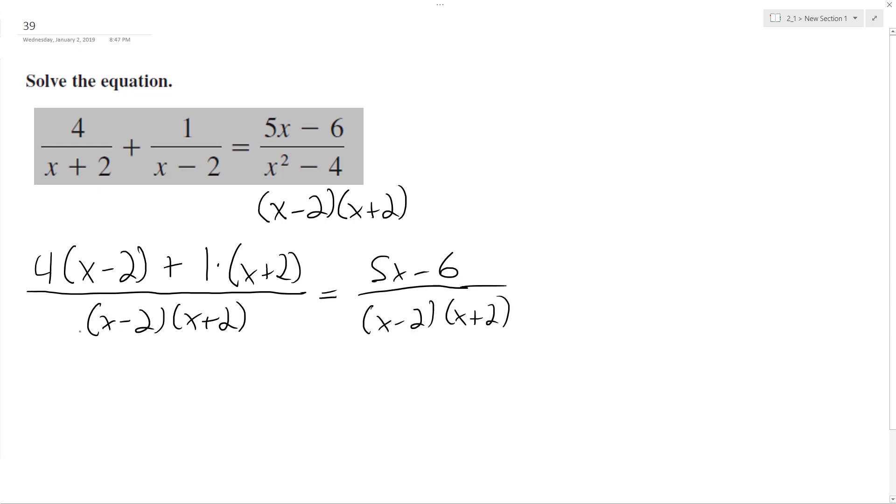So they have the same common denominator. I can get rid of that. And we end up with four x minus eight plus x plus two equals five x minus six. Combine like terms: five x minus six equals five x minus six.